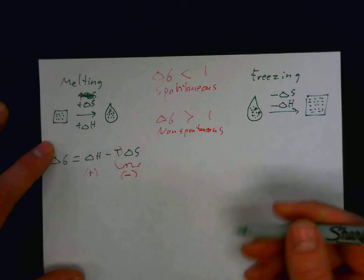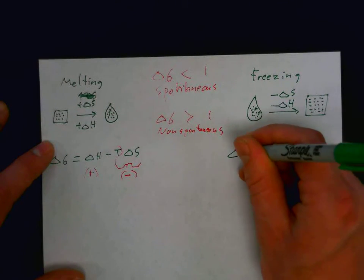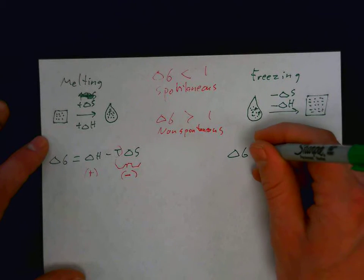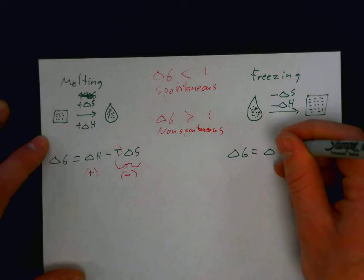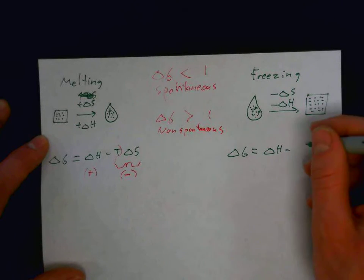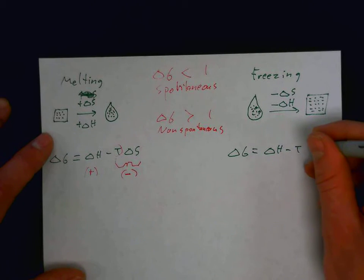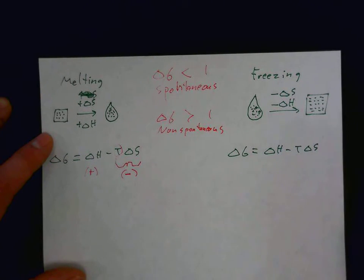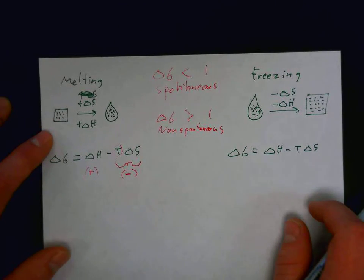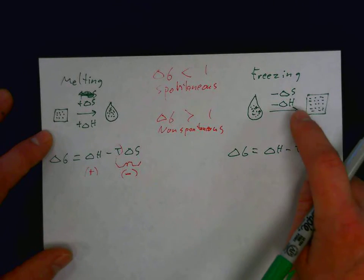So, if we consider the equation, delta G is the change in enthalpy minus the temperature times the change in entropy. So, the enthalpy is negative.